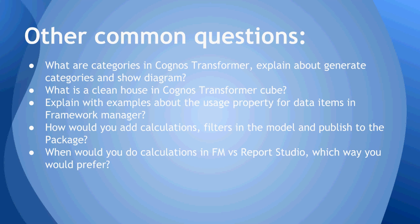A fact is a column or measure — it is a number which when an arithmetic operation is performed on it gives you a full understanding of the data. It is a quantitative field. An attribute is something which enhances the definition of an identifier. For example, customer name, customer type, customer location, customer phone, and customer email ID are all attributes to the identifier customer ID.